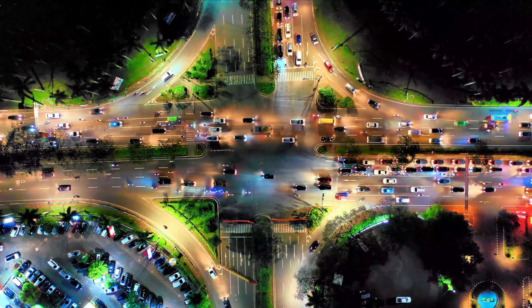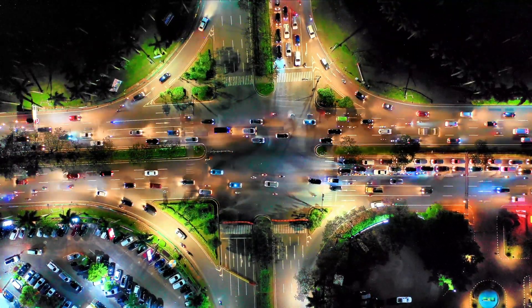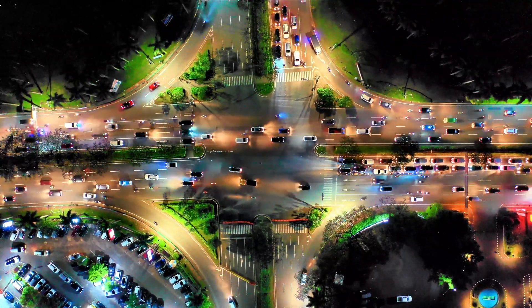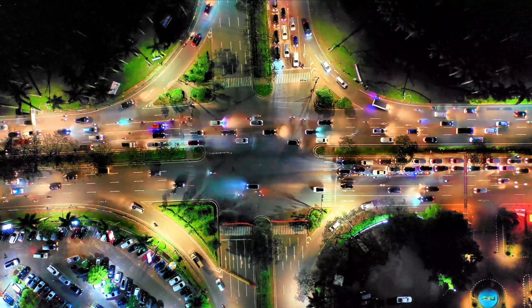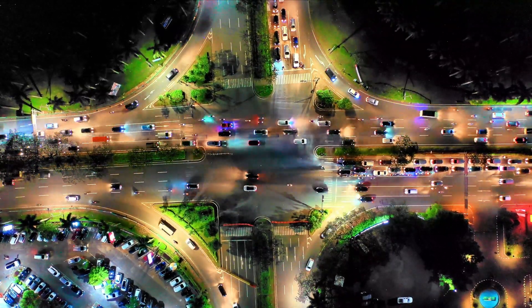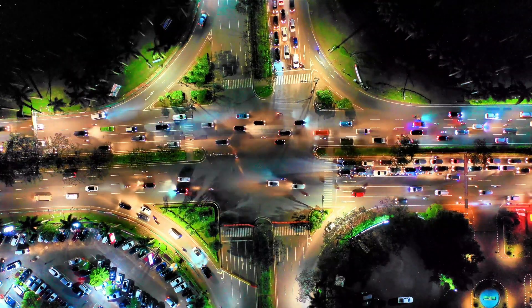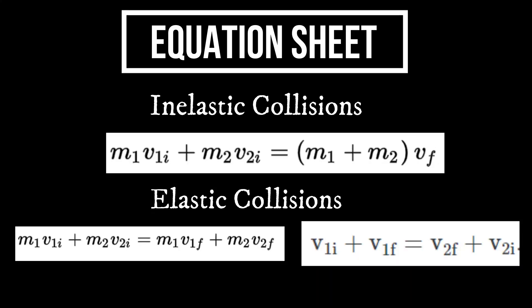A good example is a car accident, where a car hits another car and they start traveling together — they stick together. That is a perfectly inelastic collision. In this video, we're only going to be solving perfectly inelastic collision problems, so you'll see some examples with actual solutions.